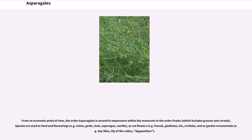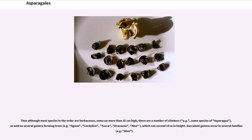Species are used as food and flavorings — for example onion, garlic, leek, asparagus, and vanilla — as cut flowers, for example freesia, gladiolus, iris, and orchids, and as garden ornamentals, for example daylilies, lily of the valley, and agapanthus.